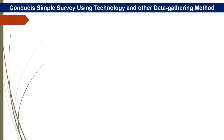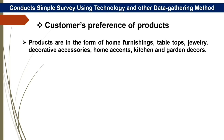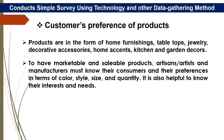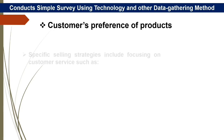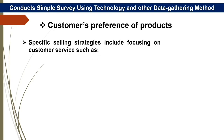Customers' preference of products. Products are in the form of home furnishings, tabletops, jewelry, decorative accessories, home accents, kitchen and garden decors. To have marketable and saleable products, artisans/artists and manufacturers must know their consumers and their preferences in terms of color, style, size, and quantity. It is also helpful to know their interests and needs.